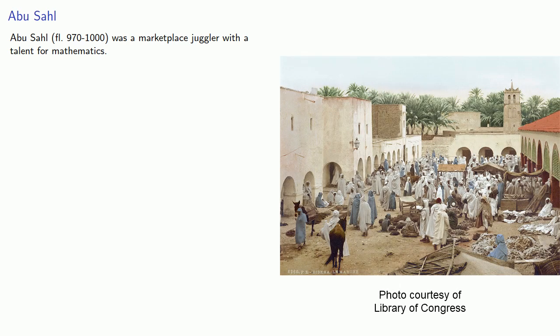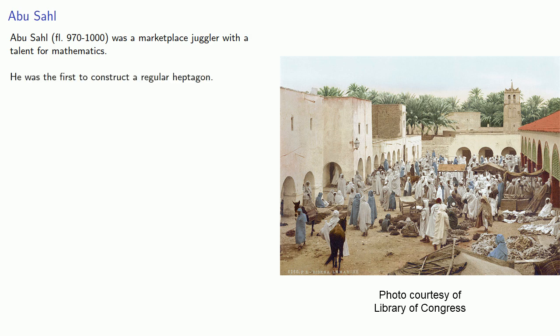And so we turn to Abu Sal, who lived in the latter part of the 10th century. Now, Abu Sal had an interesting career for a mathematician. He was a marketplace juggler with a talent for mathematics. And he was the first we know of to construct a regular heptagon.